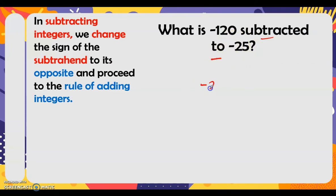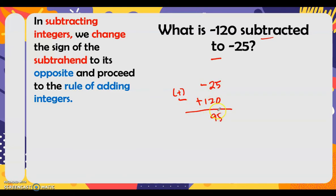Next: what is negative 120 subtracted to negative 25? When we say 'subtracted to', we write first negative 25 minus negative 120, then change the sign of the subtrahend — negative 120 becomes positive 120 — giving us negative 25 plus 120. In adding unlike signs, we subtract: 120 minus 25 is 95. Copy the sign of the greater absolute value — 120 is positive — so our answer is positive 95.